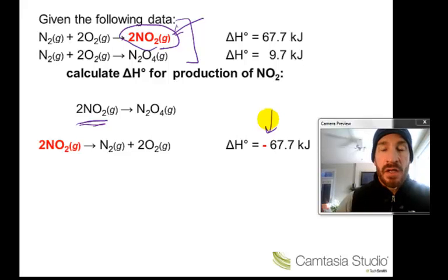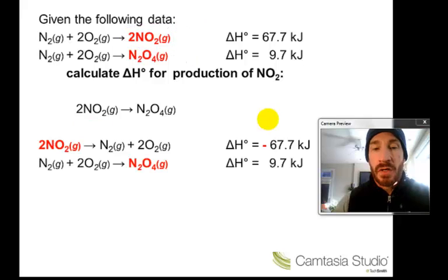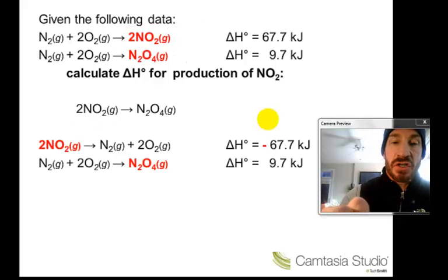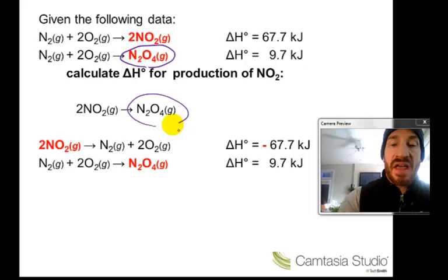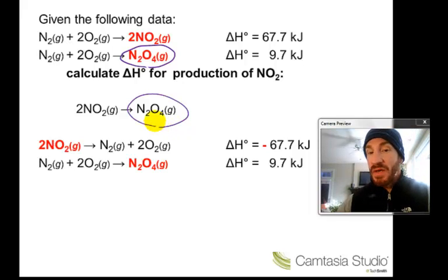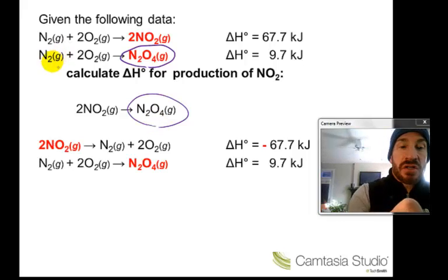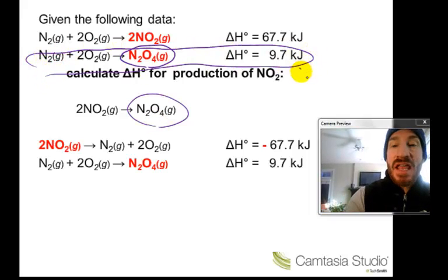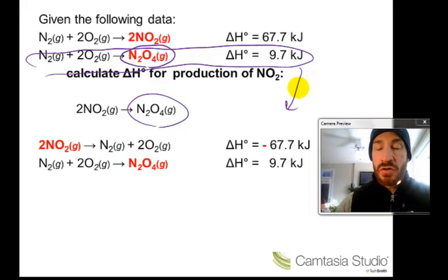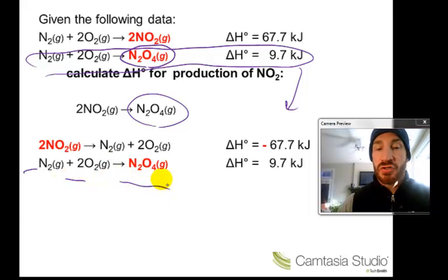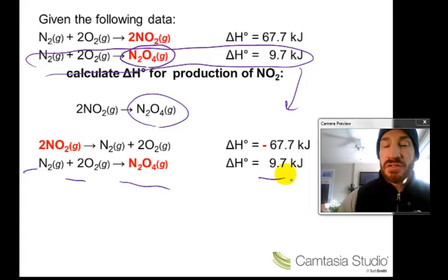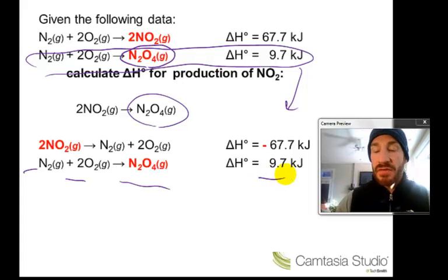For the second reaction, the unique substance is N₂O₄. There is one mole of it as a product in the given reaction, and one mole of it as a product in the target reaction. Since they match, we write the reaction exactly as given: one mole of nitrogen plus two moles of oxygen gives one mole of dinitrogen tetraoxide, and we do not change the delta H at all. Now we're ready to combine both reactions and their delta H values.